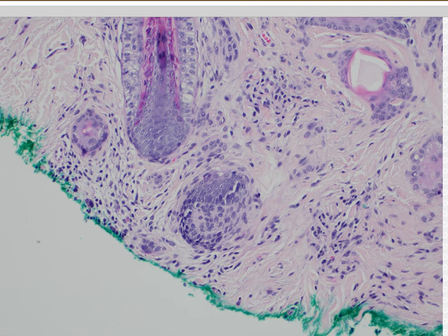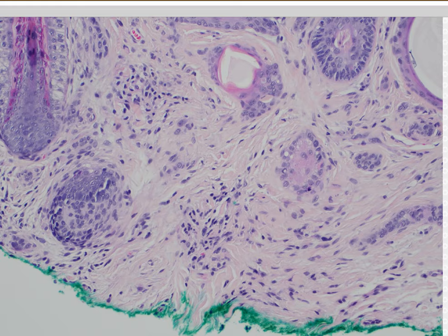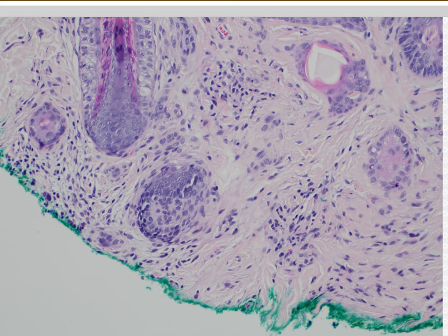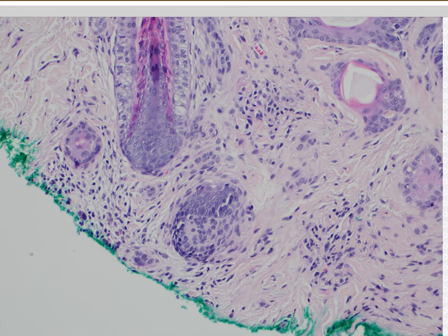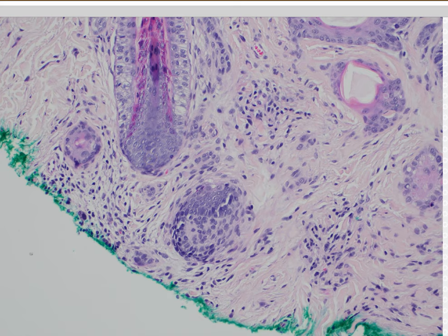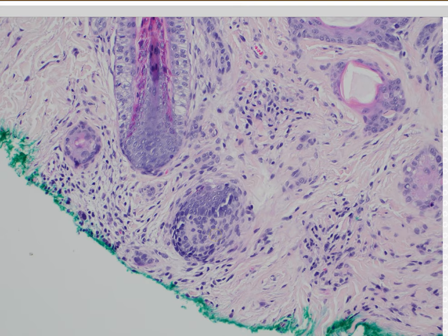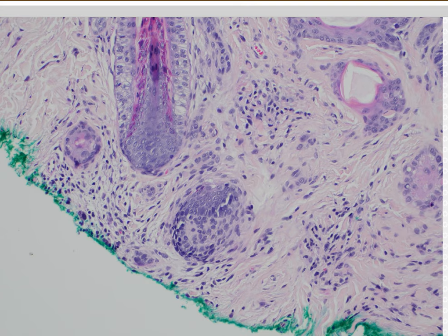Some people disagree and think basals can have papillary mesenchymal bodies, but I don't personally believe that. It can also help when you're seeing little nests of blue cells in the dermis and wondering if that's a hair follicle or a little bit of basal cell carcinoma on a shave biopsy. Once I find the hair papilla — those little stromal cells — that points me to this being a benign hair follicle, not a piece of basal cell.